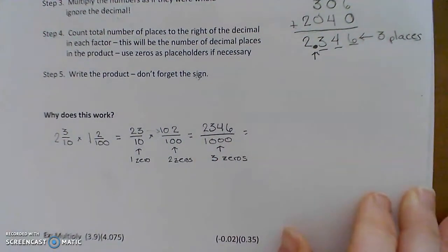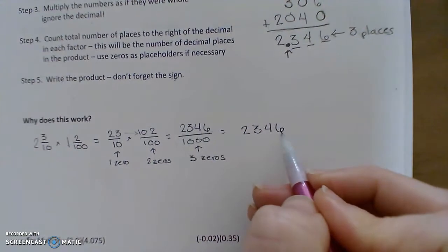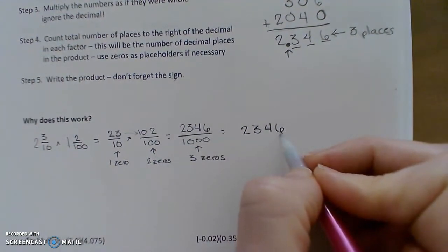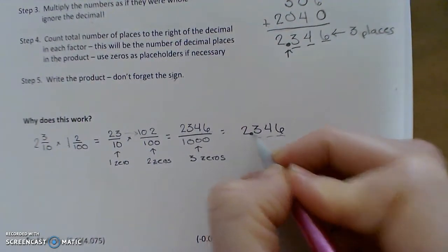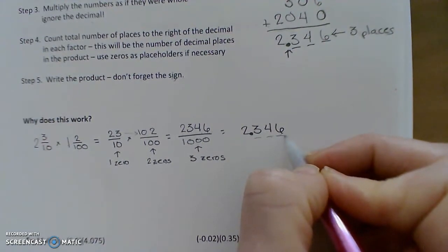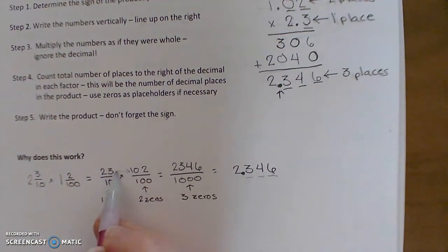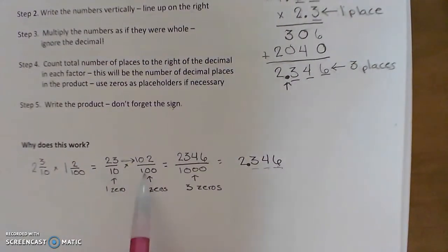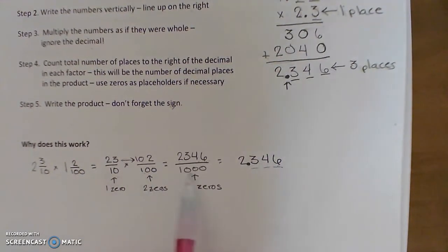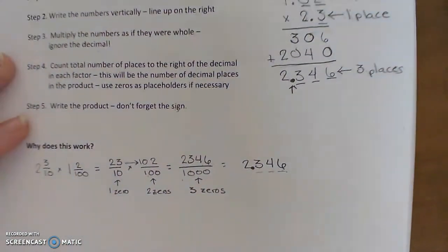In the denominator, I have one zero and two zeros. When you multiply those together, 10 times 100 is 1,000, giving three zeros. So this is 2,346 thousandths. Converting back to a decimal, you write all the digits and make sure they end in the thousandths place — three places to the right of the decimal point. So basically, this tells you to multiply the numerators and then count the place values, like figuring out how many zeros you need in the denominator. That's why this procedure works.